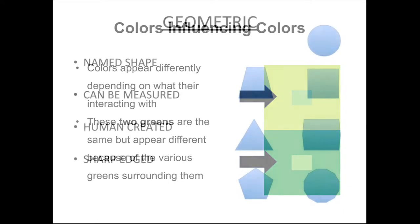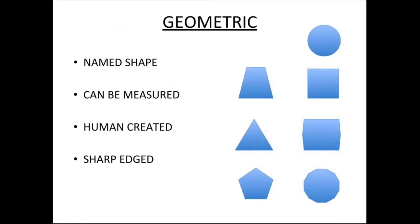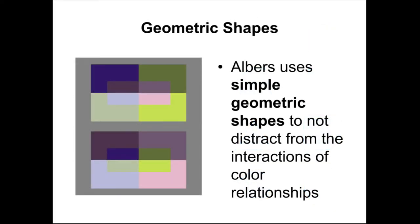He also used geometric shapes. Geometric shapes all have names, can be measured, are usually sharp-edged, and created by people. He used these simple shapes so the audience would not be distracted by visually stimulating content, so they could just focus on the relationships of colors. When these shapes are basic and simple, you really focus on the colors opposed to the shapes that contain them.